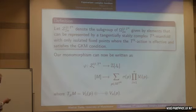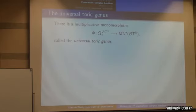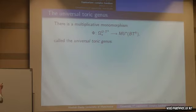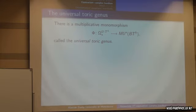There's also a multiplicative monomorphism, first studied by Tom Dieck and many people since then, including recently Buchstaber, Panov, and Ray in their paper 'Toric Genera'. They call this the toric genus: a monomorphism from the geometric equivariant bordism ring into MU*(BTK), which factors through an equivariant homotopical bordism theory that you can define in analogy to the Thom spectrum non-equivariantly.